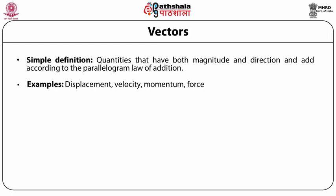Now let us define the scalar or dot product of two vectors. If we take two vector quantities, vector a and vector b, then the scalar or dot product — vector a dot vector b — equals the modulus of vector a times the modulus of vector b times cos θ, where θ is the angle between the vectors a and b, and the moduli represent the magnitudes of the respective vectors.